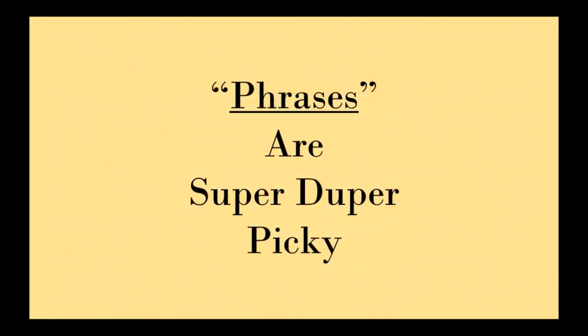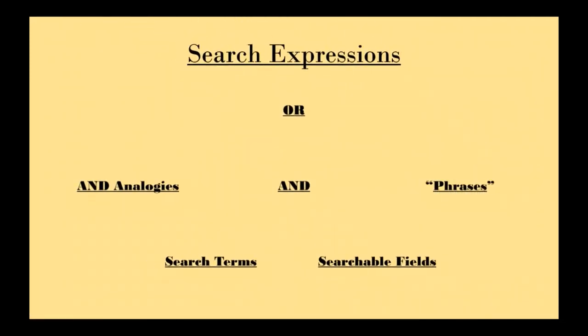So phrases are super duper picky. We use them when we're looking for specific terms of art, like 'racial justice' or 'glass ceiling'. If we use just 'glass' and 'ceiling' without specifying it as a phrase, it would return documents that contained glass and ceiling in different parts of the document — not next to each other; you could see a document with ceiling and then glass. But if we're looking for 'glass ceiling', we use quotation marks around it because it's a particular term of art. You can also use phrases when you're looking for titles or quotes — things you know are exactly in a particular order right next to each other — to eliminate false positives and find the exact items that match exactly.